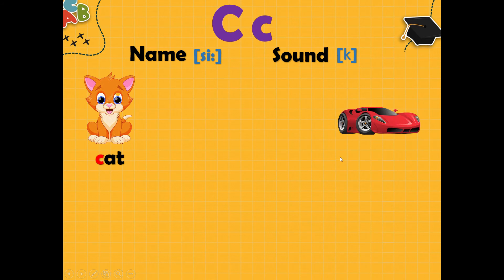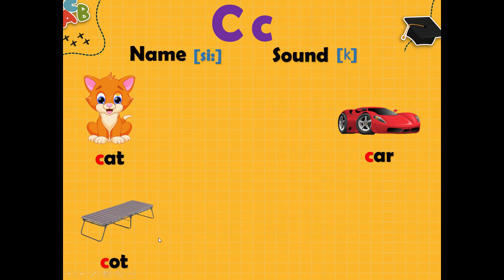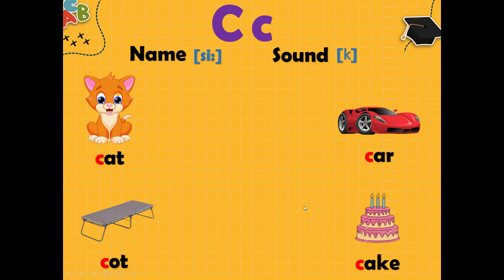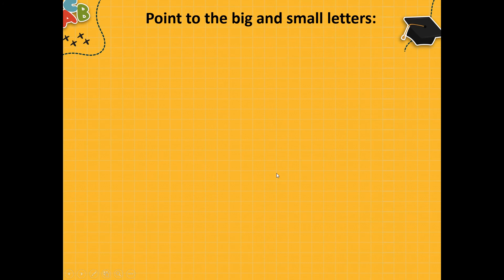What is it? It is car. Car, K, car. Good. What is it? It is cut. Cut, K, cut. Good. And last one, cake. K, cake. Good.